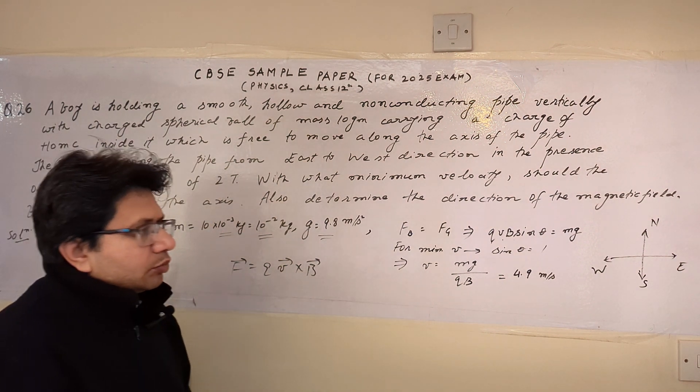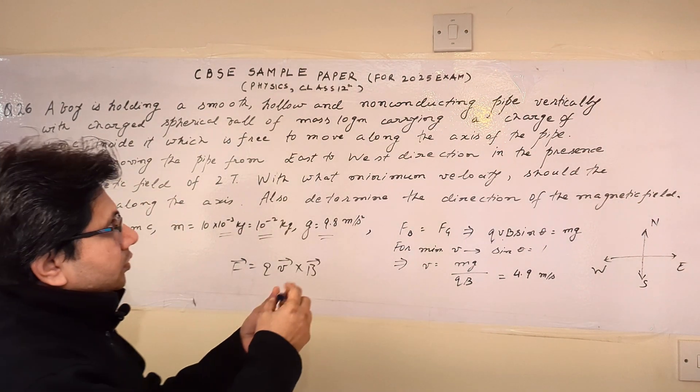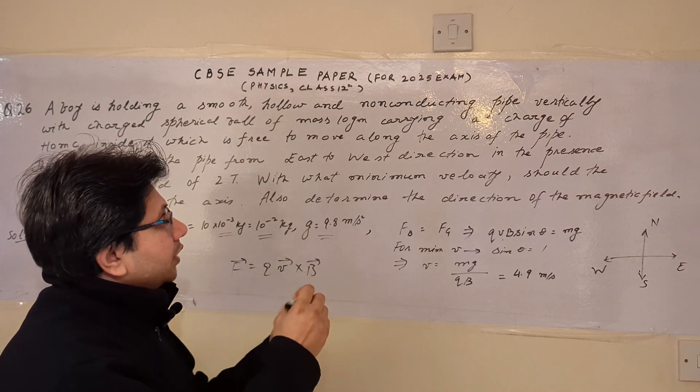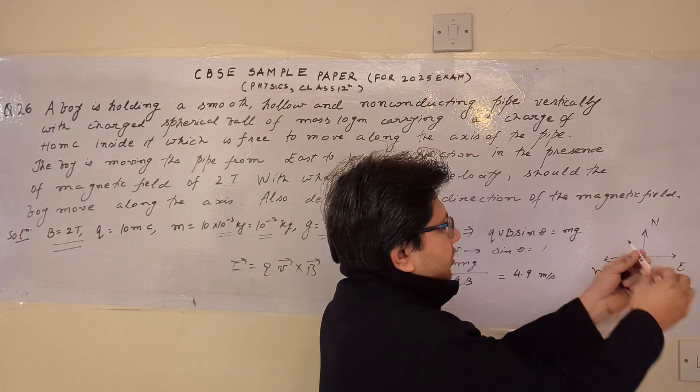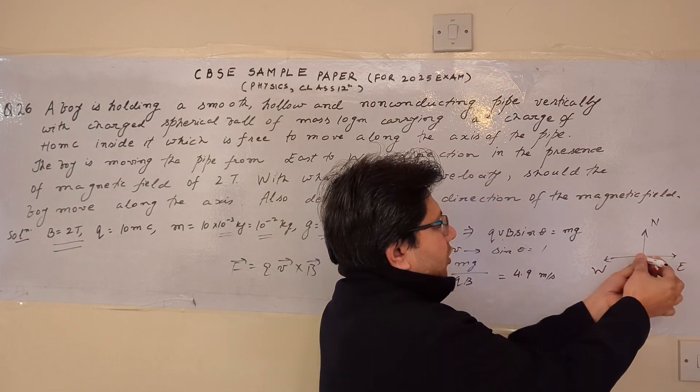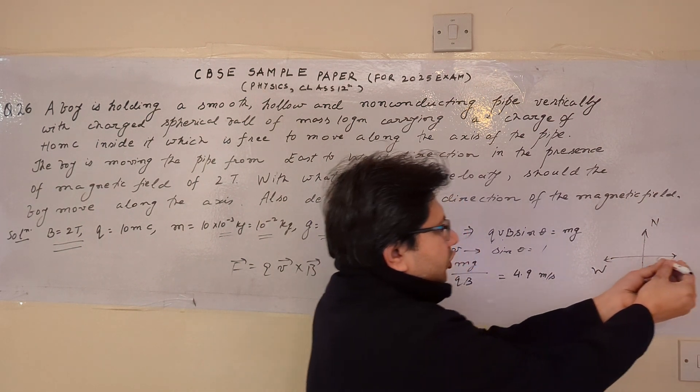So basically the problem is this: a boy is holding a particular pipe. In this particular pipe there is a ball having a certain mass and a certain charge. So this pipe is vertical, placed vertically like this, held by the boy.